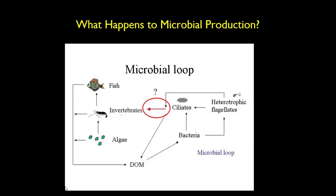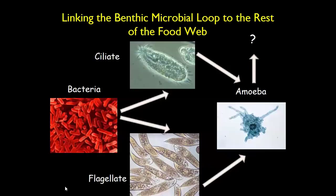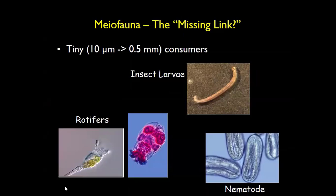The question is: does this energy find its way back into what we might call the macro food web — the food web with invertebrates and things we can see? We've got bacteria taking up dissolved organic matter, consumed by other microbes like protozoans. All these tiny microscopic things feed on each other, and their waste provides food. It might just be a self-contained ecosystem. So what happens to this microbial production? There are organisms called meiofauna — kind of the middle size, between micro and macro — that are consumers and can bridge that gap.